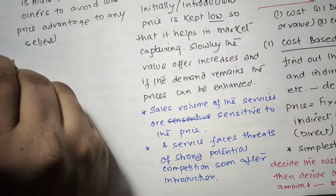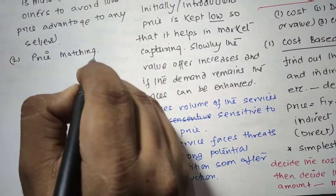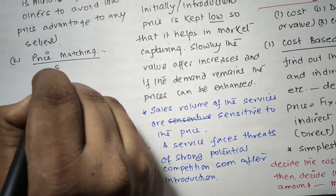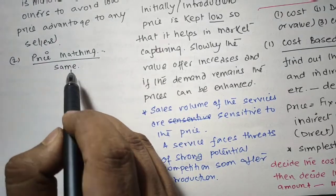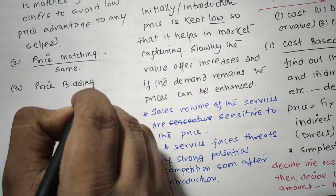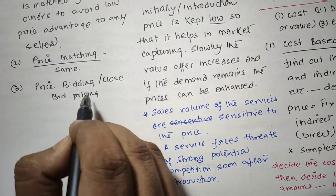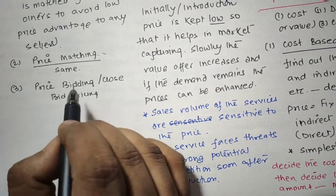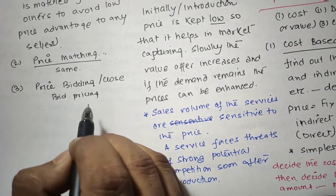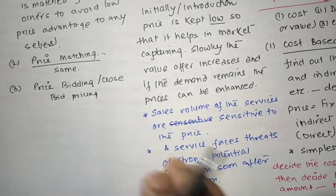Secondly we have price matching. Price matching is adopted for playing safe in the mature market by pricing at the same level. This is nearly done by taxi services or internet cafes. Another one we have is price bidding, also known as closed bid pricing. As the name suggests, this is a strategy mostly used by construction and building services for sending the buyer the same price so that they get a close bid of the product and services.